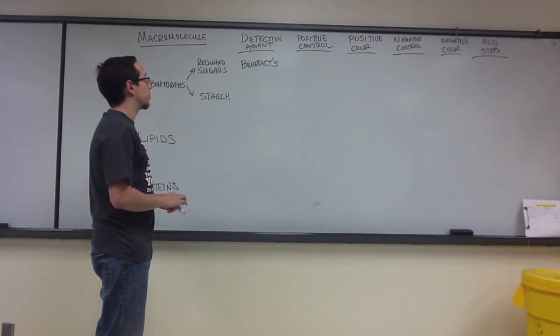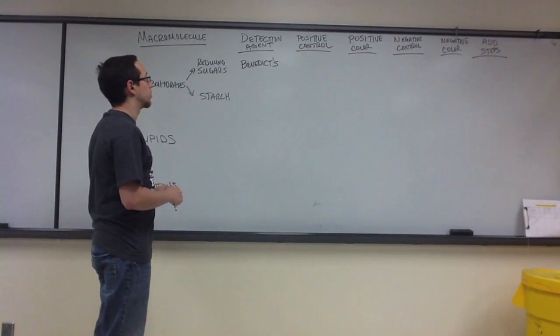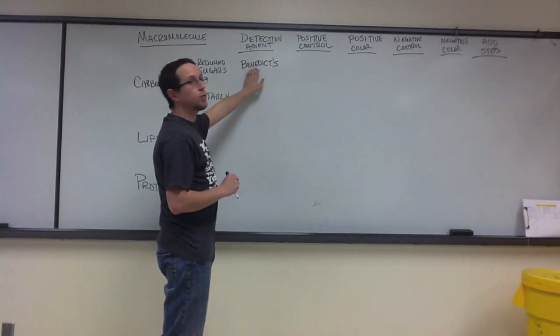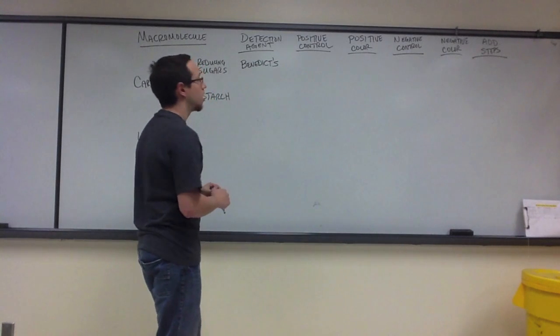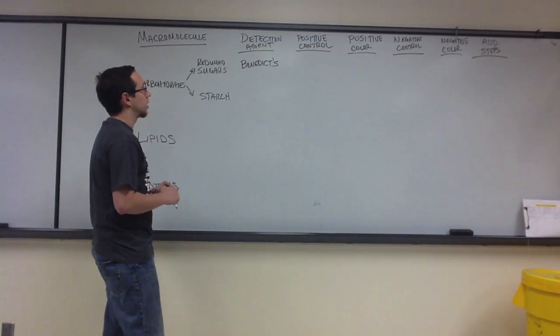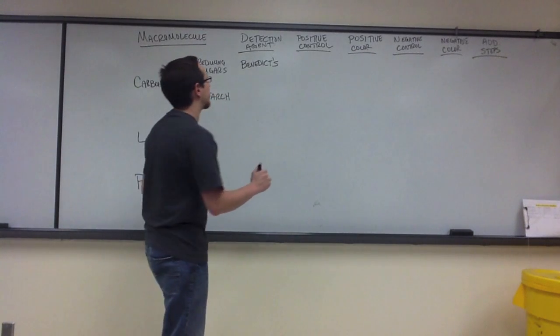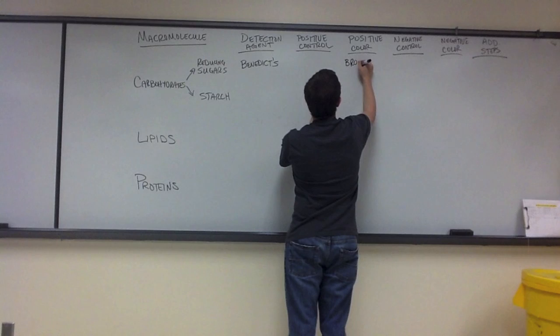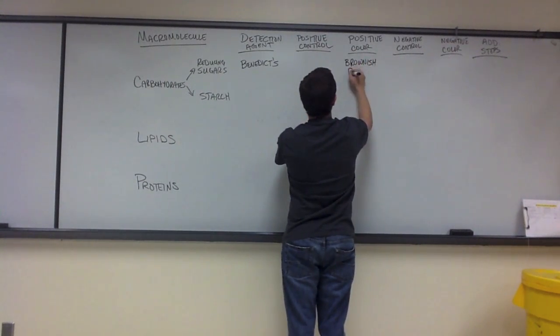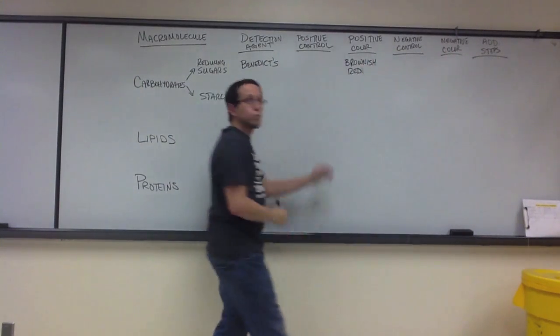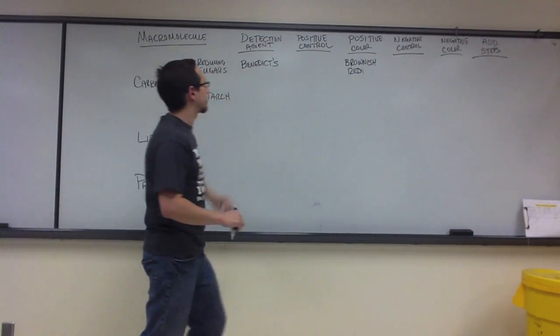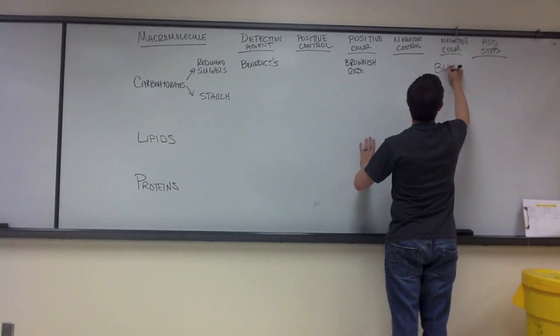Reducing sugars are sugars that have what's known as a free carbonyl group, and you learn this functional group in your lecture. The oxygen from that free carbonyl group actually reduces the copper in the Benedict's, creating what's known as copper oxide, and this copper oxide has a brownish-reddish color. So our positive color here was a brownish-red or reddish-brown. The negative color is the color of the Benedict's, and that color was a blue color.